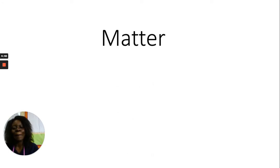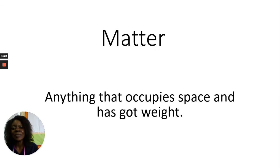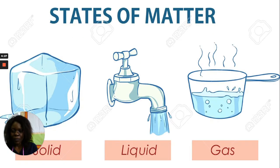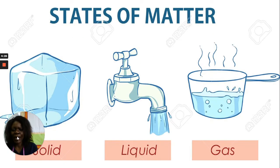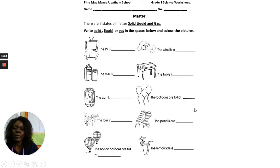Now we've been talking about matter. What is matter? Matter is anything that occupies space and has got weight. Now what are the states of matter? The states of matter — we have solid, liquid, and gas. These are the three states of matter.